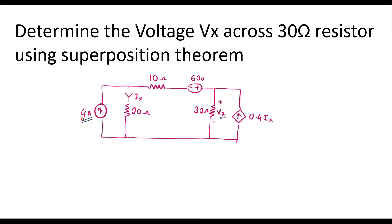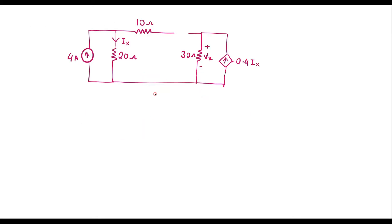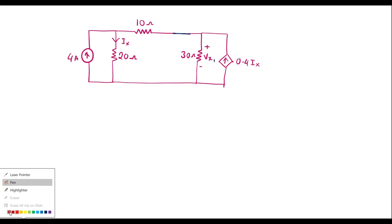So let me consider the 4 amp source alone. If we consider the 4 amp source alone, the 60 volt source should be short circuited. So let me short circuit the 60 volt source. Now I will find the voltage across the 30 ohm resistor and call it Vx1. Let me simplify this circuit.